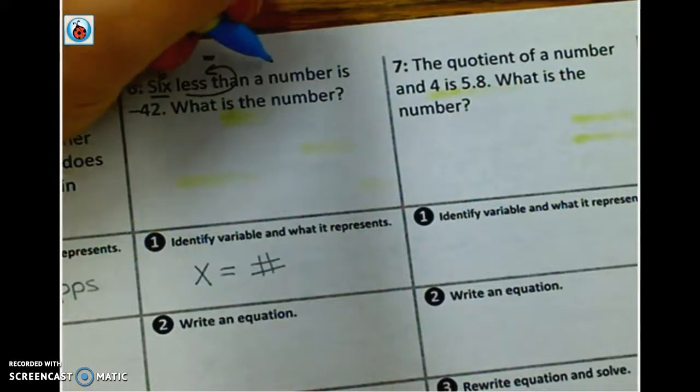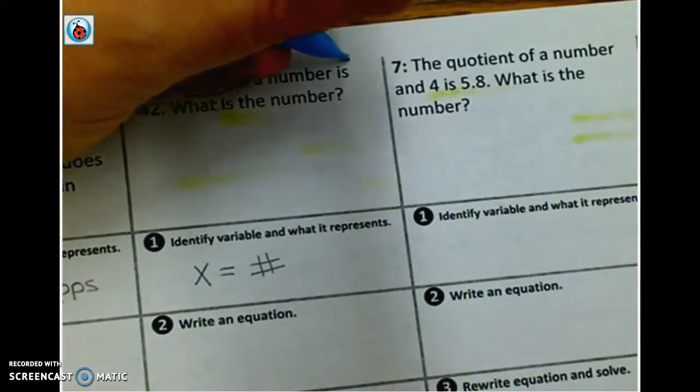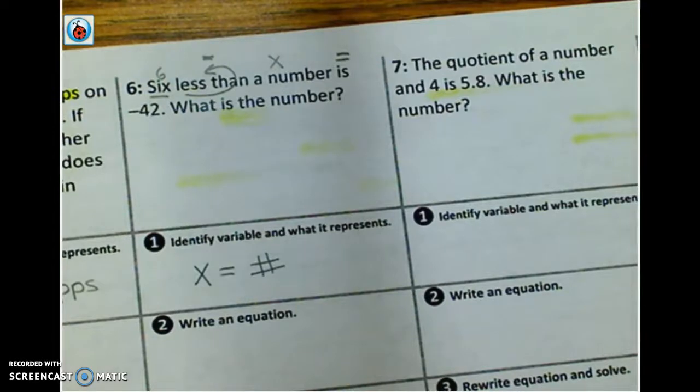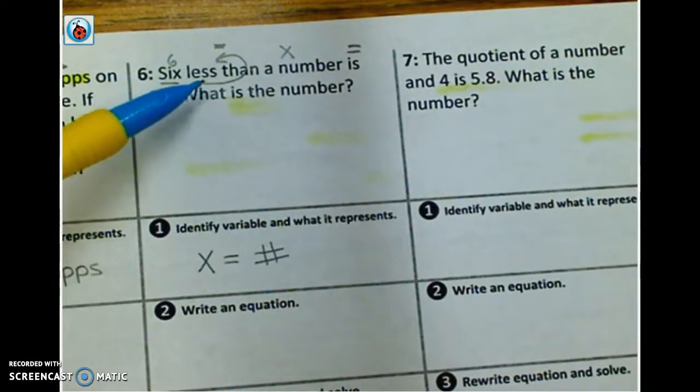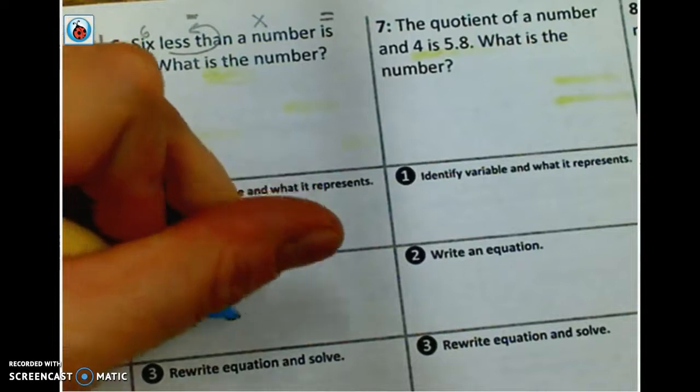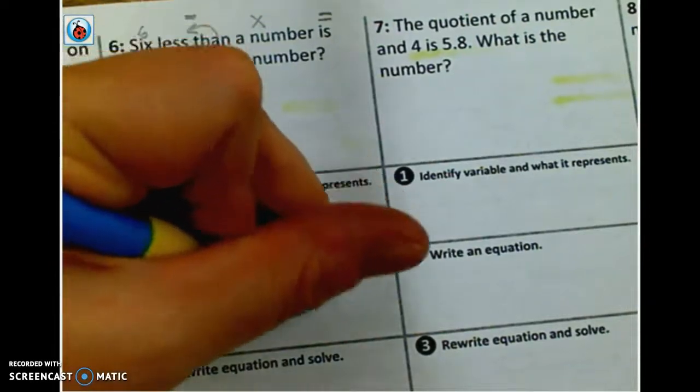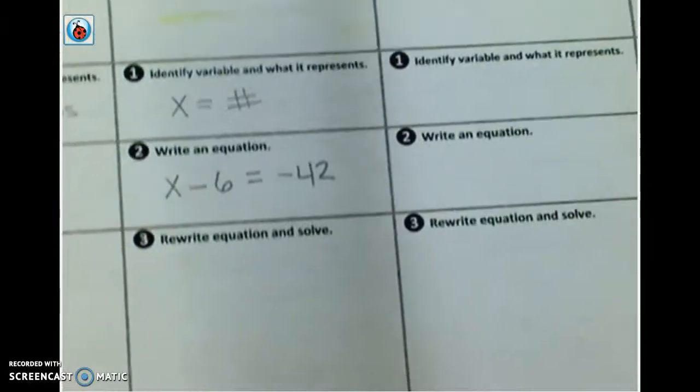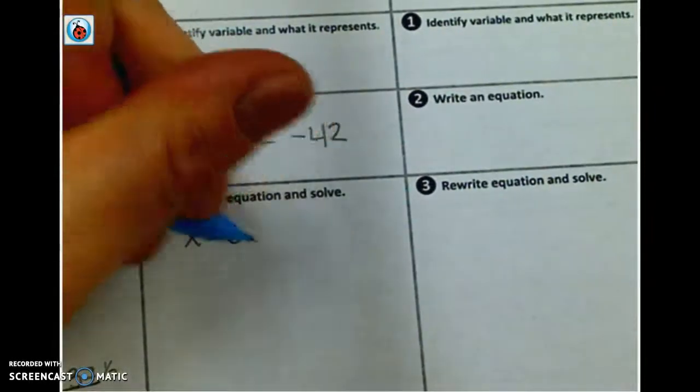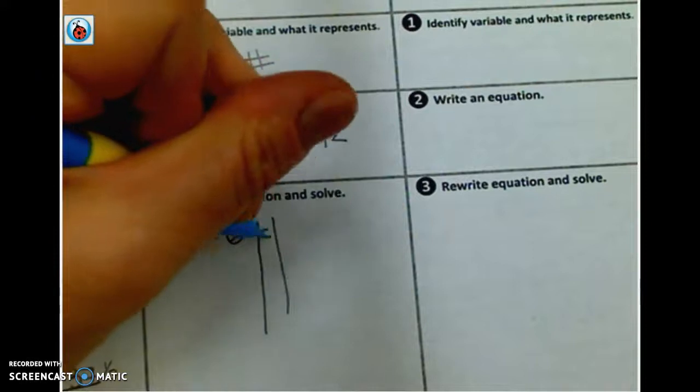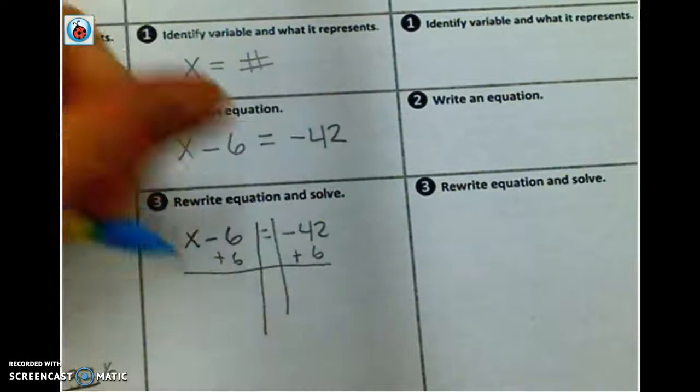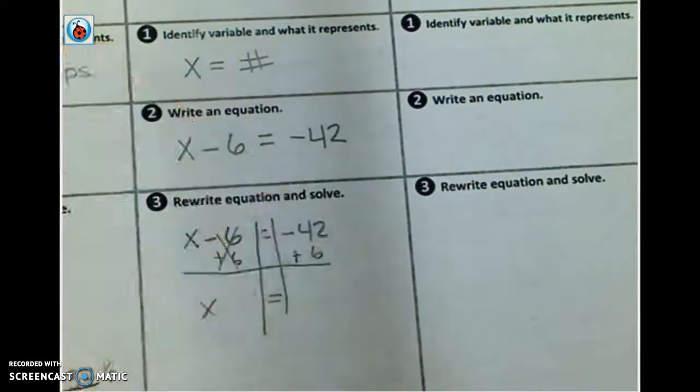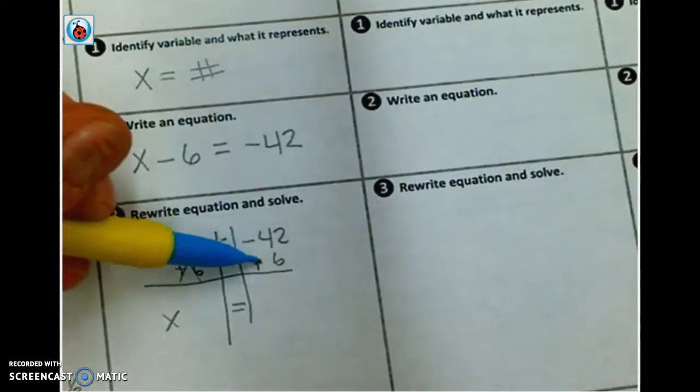So I'm going to rewrite this. Remember, it's not 6 minus X because it's 6 less than a number. So I'm going to write my equation as X minus 6 is negative 42. So I've got my equation. Now I can go ahead and solve it. Equals negative 42. So that means I'm going to add 6 to both sides. Those cancel out. Now X equals, I have a negative 42 plus 6. They are opposite signs. So remember your integer rules. Same signs, add and keep. Opposites, subtract. 42 minus 6 is 36. The number further from 0 is negative 42. So it's a negative 36.